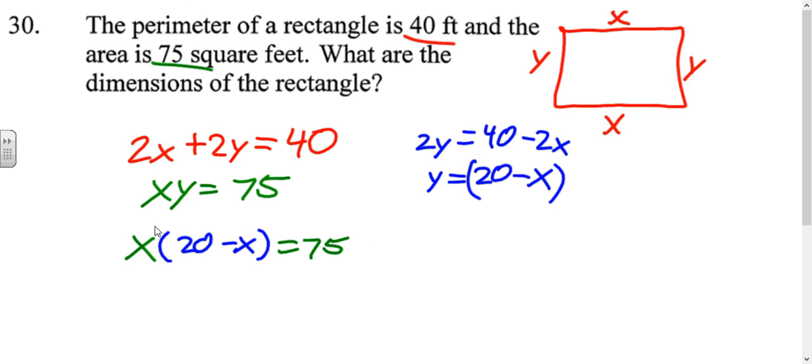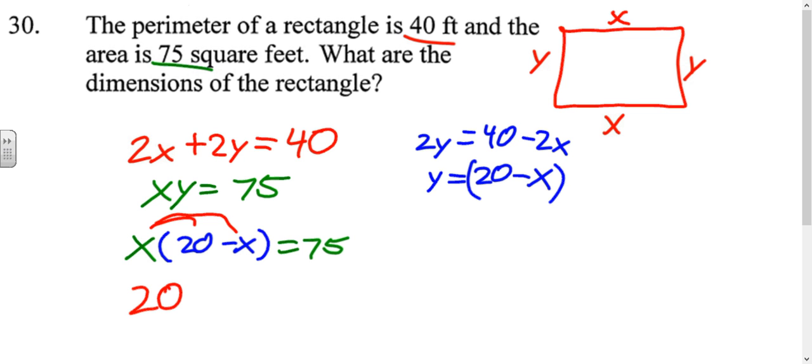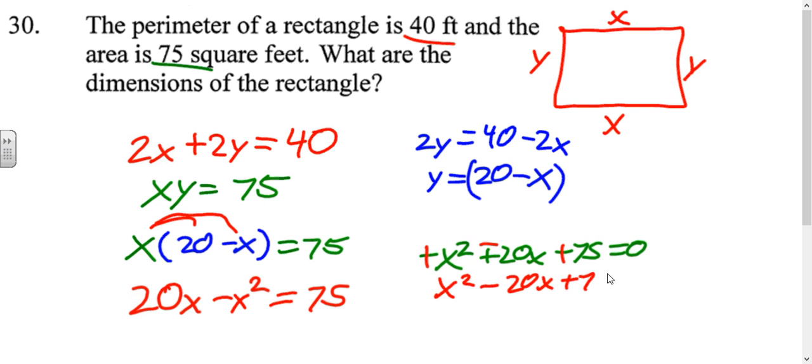Solve that out. We're going to distribute: 20x minus x squared equals 75. Since that's a quadratic, we want to get everything on one side. So x squared, negative x squared plus 20x minus 75 to the other side equals 0. Now we don't want negative x squared, so we're going to change all of our signs. And we'll solve that equation: x squared minus 20x plus 75 equals 0.